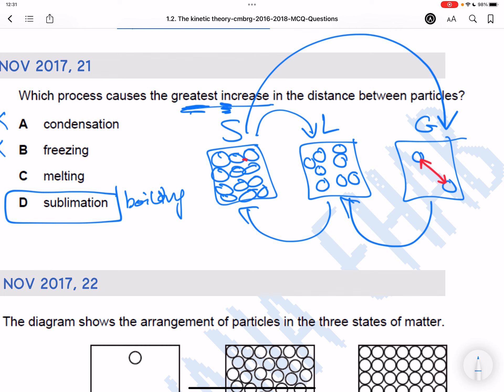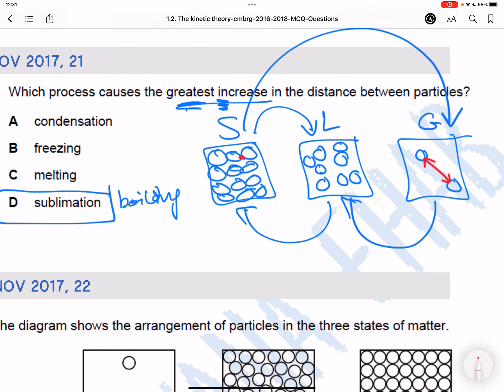I would choose boiling because the distance change between solid, which is essentially like no distance, to liquid is a very small change. But from liquid to gas is a really big change. It's a bigger change than from solid to liquid. So I would choose boiling over melting.